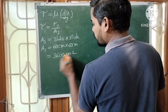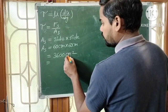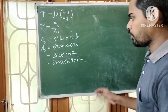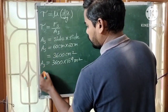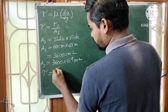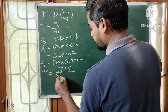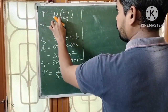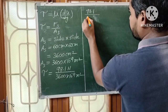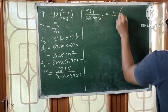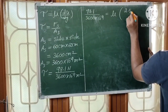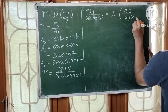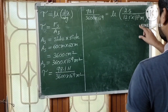Converting the area: 3600 centimeter square to meters square. One centimeter square equals 10 to the power of minus 4 meter square, so area is 3600 into 10 to the power of minus 4 meters square. Now plug in the values: shear stress tau equals shear force 98.1 Newtons divided by area 3600 into 10 to the power of minus 4 meters square. This equals mu times du 2.5 meters per second divided by dy 12.5 mm, converted to 12.5 into 10 to the power of minus 3 meters.